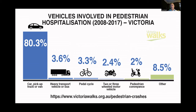In terms of the vehicles involved — this is hospital data now — unsurprisingly, the vast majority of people injured are in a collision with a car, a pickup, or a van. The hospital data also picks up other types of vehicles that might injure pedestrians: pedal cycles, bikes, and pedestrian conveyances — things like mobility scooters, skateboards and e-scooters. More than 5% of pedestrian hospitalizations — fairly significant injuries requiring hospital admission — are caused by those sort of vehicles.